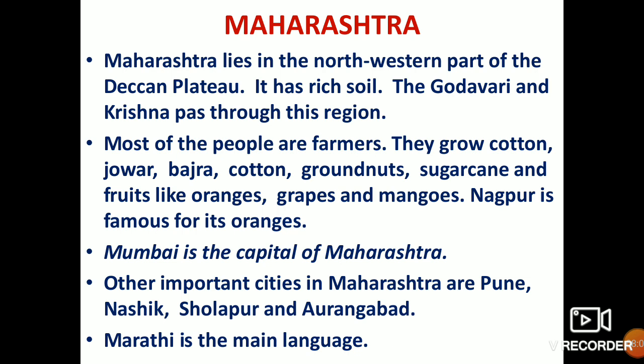Maharashtra lies in the north-western part of the Deccan Plateau. Rich black soil is found here, and the Godavari and Krishna rivers pass through this region. Most people are farmers, growing crops like cotton, jowar, bajra, groundnut, sugarcane, and fruits like oranges, grapes, and mangoes. Nagpur is famous for oranges. Important cities include Mumbai, Pune, Nasik, Sholapur, and Aurangabad. The main language is Marathi.